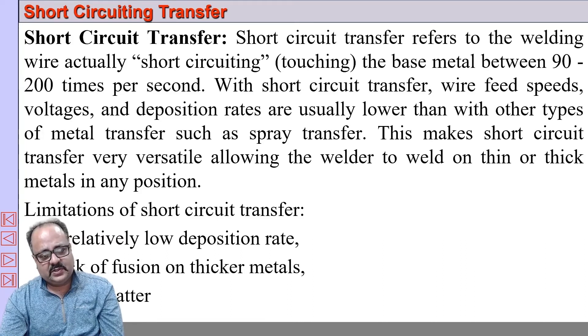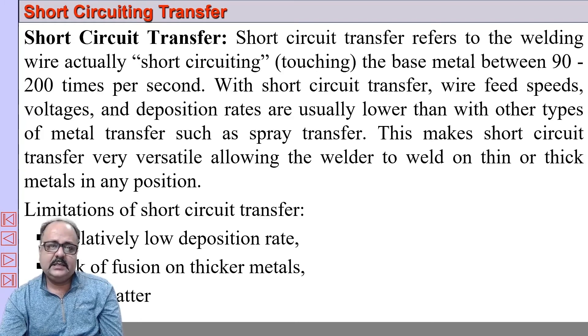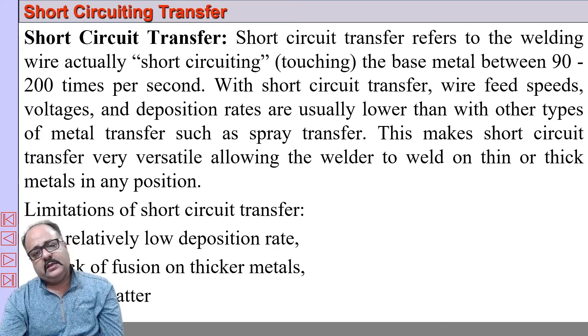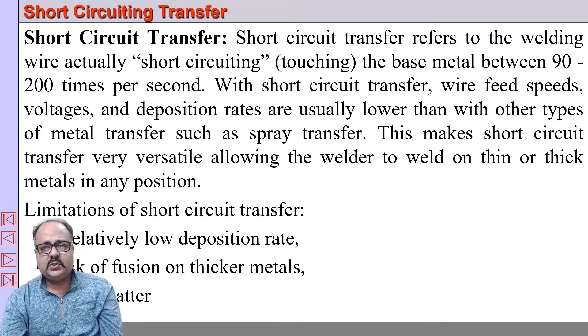The deposition rate in short circuit transfer is slow. It is mainly used for thin metals, though spatter is higher. One advantage is that it can be carried out in all-position welding.